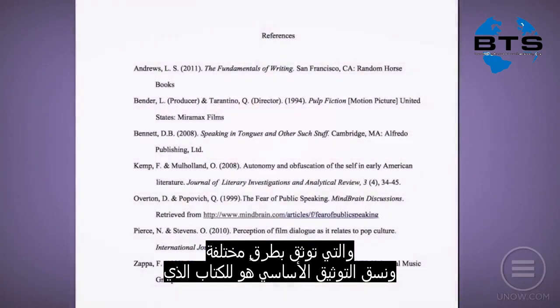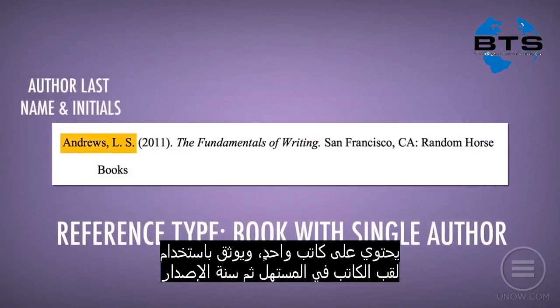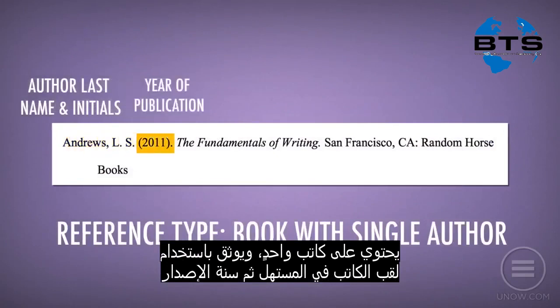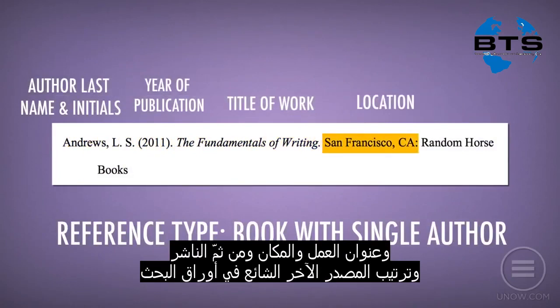The most basic format is for a book with a single author: author last name, initials, year of publication, title of work, location, and publisher.